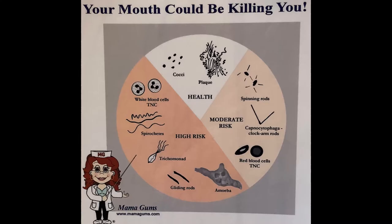This is a chart that shows diagrammatically what we're looking at and what we're looking for when we look at a plaque sample on the microscope. First of all, a lot of the slide is made up of just a bunch of goo, and when we look over to the edges that are a little bit more clear, then we can see the bacteria.